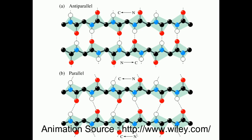The other type of secondary structure of proteins we see is beta sheets. They are formed from largely extended polypeptide strands that make hydrogen bonds between the backbone groups of neighboring strands. The primary structure amino acid sequences of the polypeptide chain are arranged side by side, with adjoining hydrogen bonding between the neighboring strands of those primary sequences.